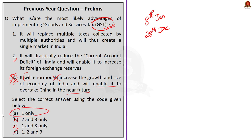Now look at the first statement and ensure whether your answer is correct. The first statement says GST will replace multiple taxes collected by multiple authorities and will thus create a single market in India. Yes, of course it is correct — it even subsumed all the states' value added tax. So statement one is correct. I hope you understood how relevant our analysis is with respect to UPSC prelims questions.